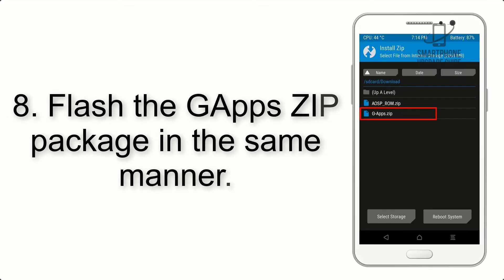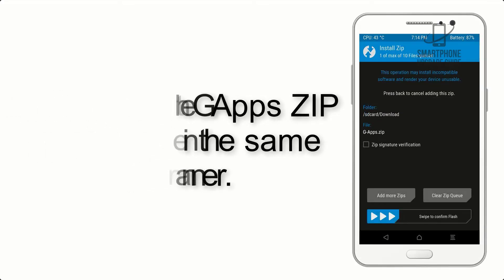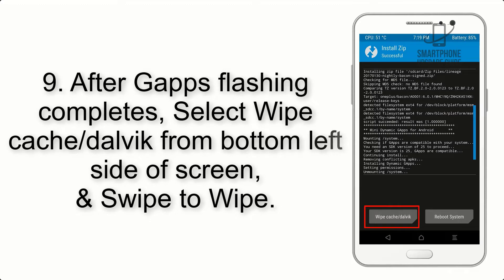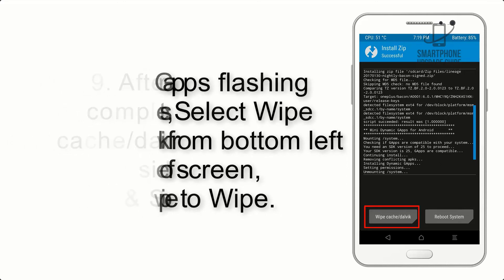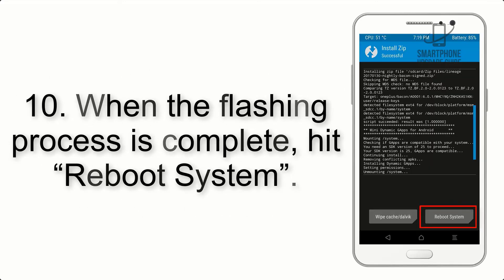Step 8: Flash the G apps zip package in the same manner. Step 9: After G apps flashing completes, select Wipe Cache and Dalvik from the bottom left side of the screen and swipe to wipe. Step 10: When the flashing process is complete, hit Reboot System.